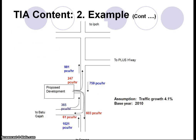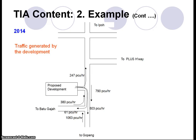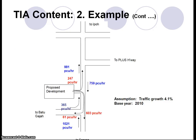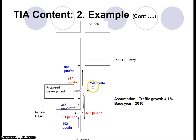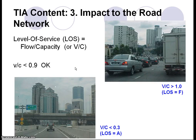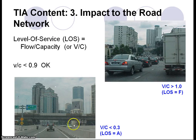You can now see the traffic generated by the development combined with the existing traffic, giving the total number of vehicles on the road. We can then calculate the level of service: if the volume-to-capacity ratio is less than 0.9 the situation is acceptable; if more than 1.0 the level of service is F — congestion; if less than 0.3, it is level of service A, which is very good.